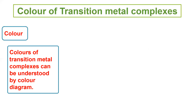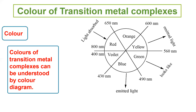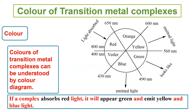The color of transition metal complexes can be understood using a color diagram. The arrow indicates which color of light is absorbed. For example, if red light is absorbed, the remaining light emitted is yellow and blue, and the substance appears green. So if a complex absorbs red light, it will appear green.